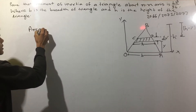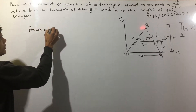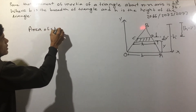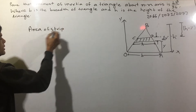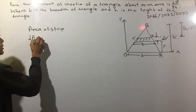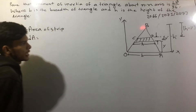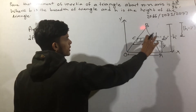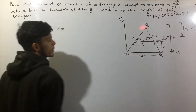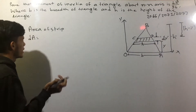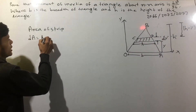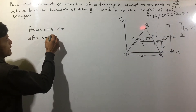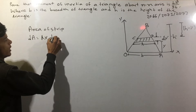Area of strip: da is equal to length and thickness multiplied. The area of length is equal to thickness dy.